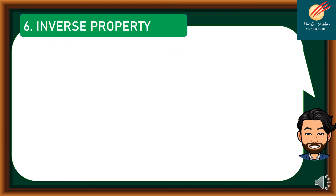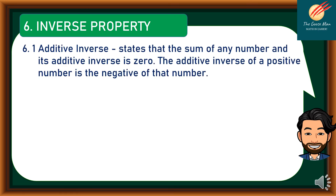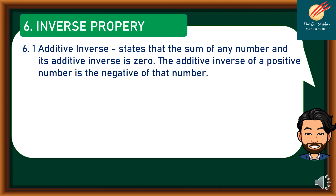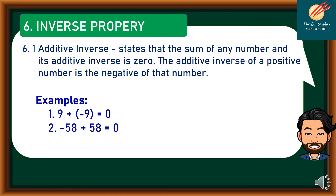Let's move on to the sixth property. The first sub-part is the additive inverse, which states that the sum of any number and its additive inverse is 0. The additive inverse of a positive number is the negative of that number. In symbols, a plus negative a equals 0. Examples: 9 plus negative 9 equals 0; negative 58 plus 58 equals 0; and 99 plus negative 99 equals 0.